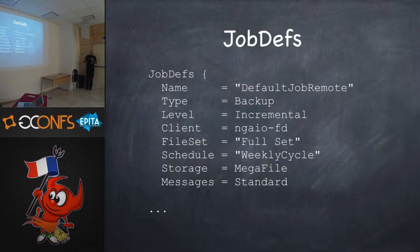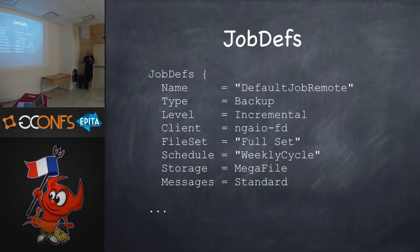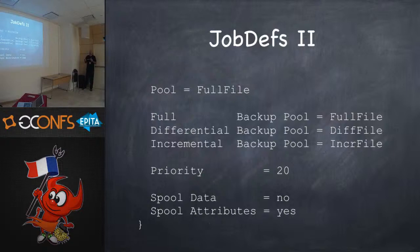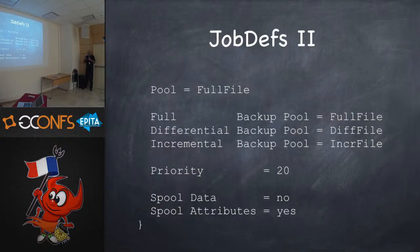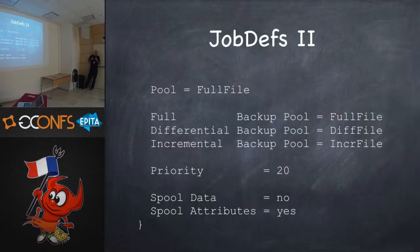Job defs is your include file — you put all common definitions there. I actually put my job defs in a separate file and include that into the Bacula director file. This is shorthand so you don't have to specify the same thing in every job. You can specify different pools for tape vs. disk backups, put different priorities on jobs — for example, running SSD backups last because they're faster, prioritizing hard drive backups first.